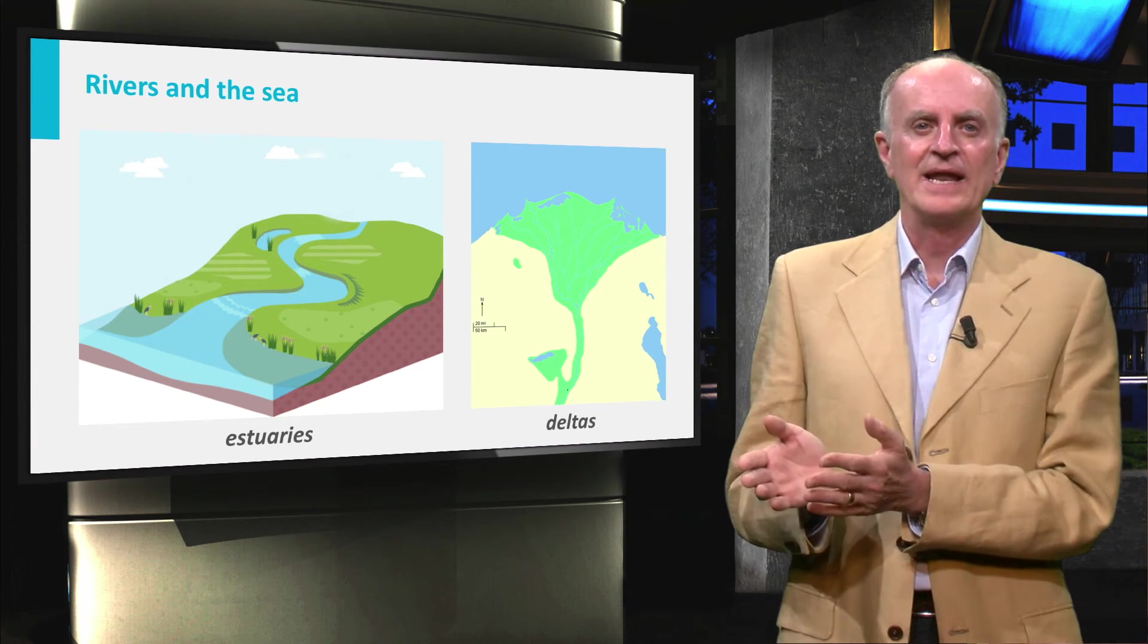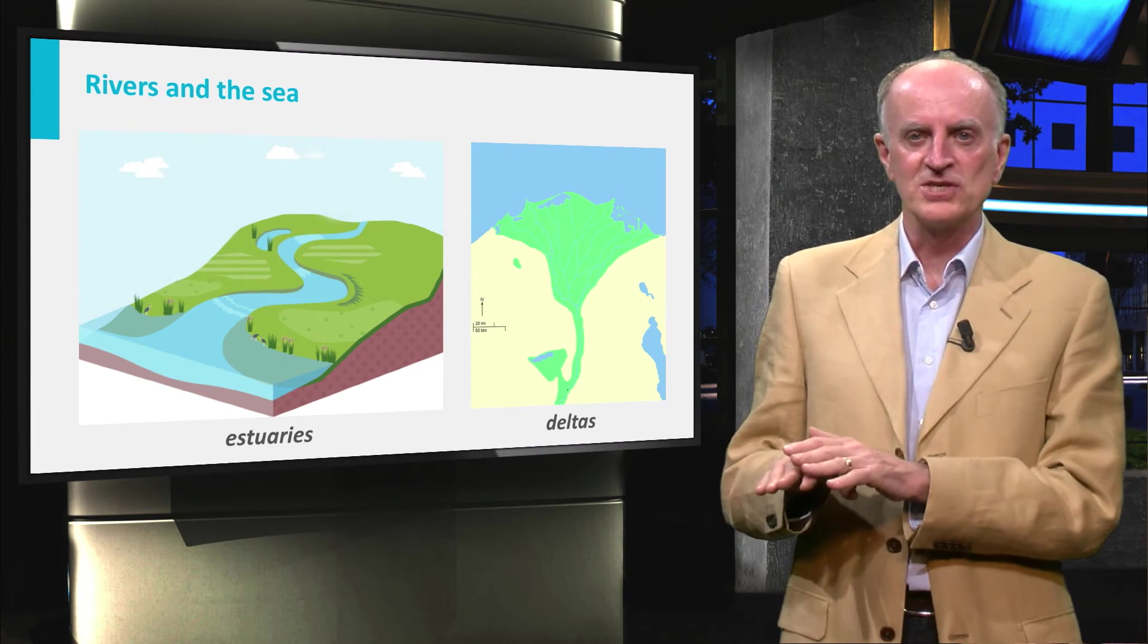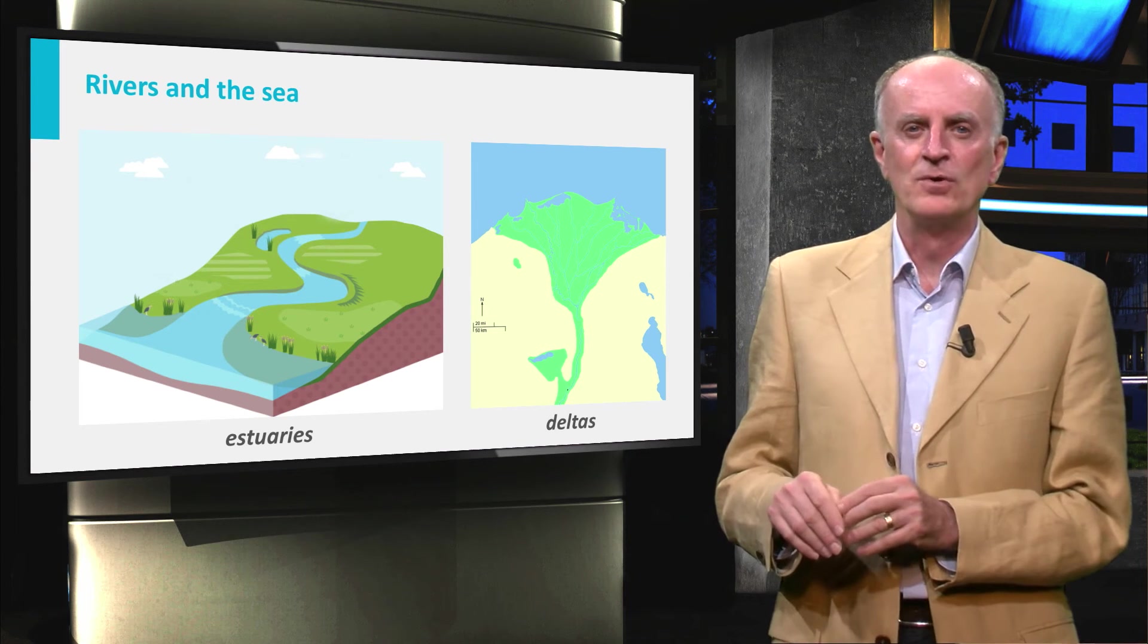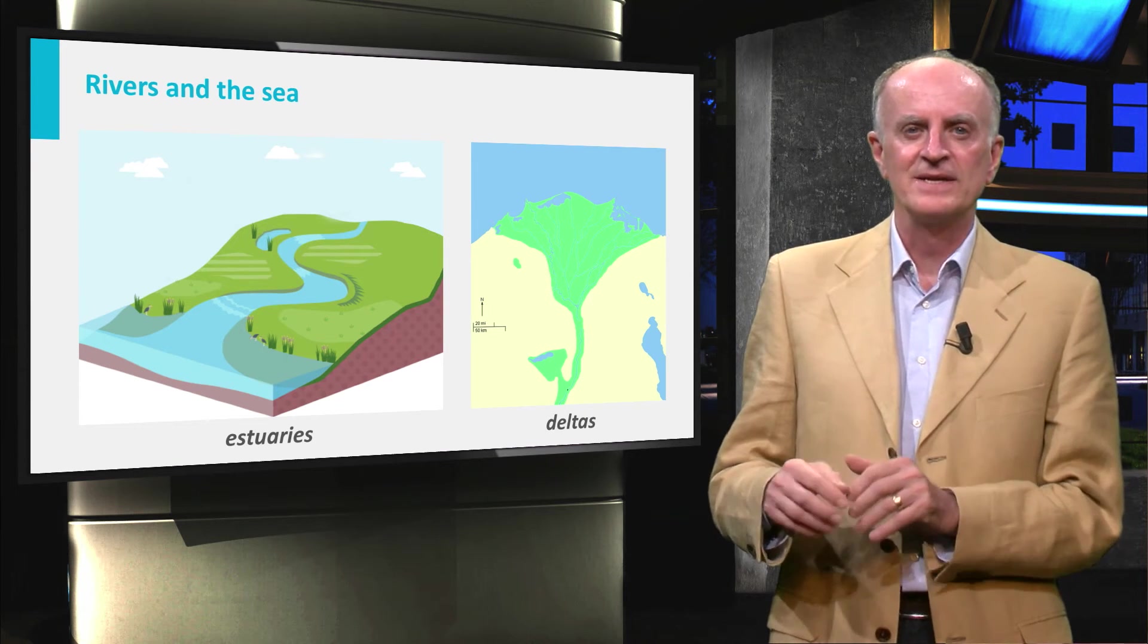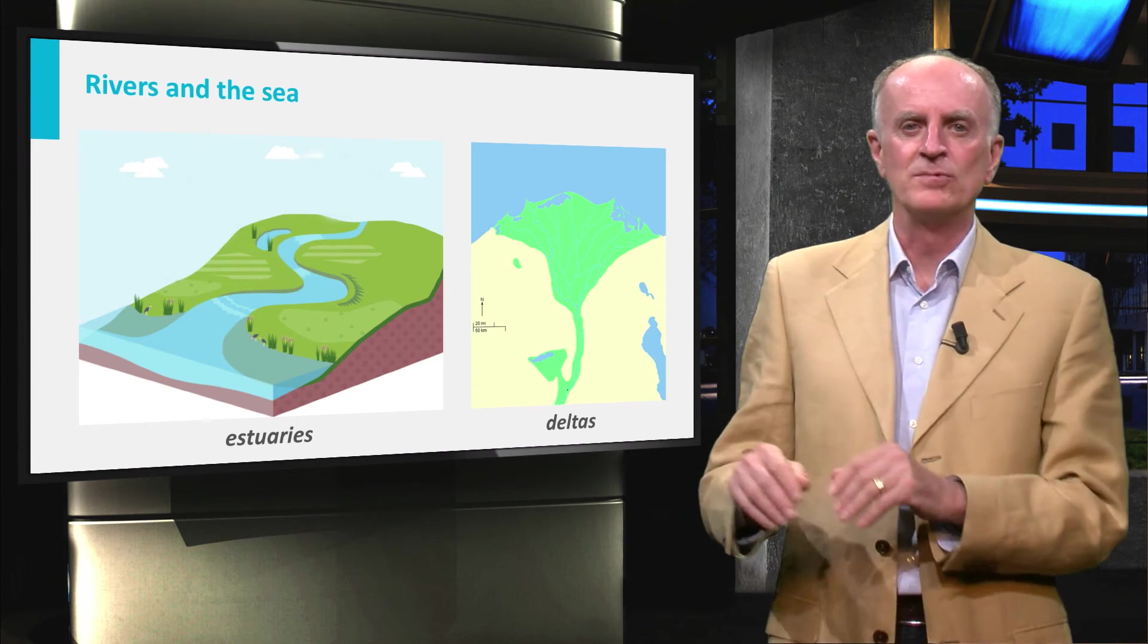Deltas are a landform which develops from the deposition of sediments carried by the river as the flow leaves its mouth and enters slow moving or standing water, typically the sea.